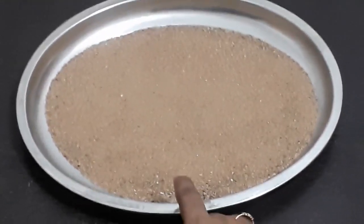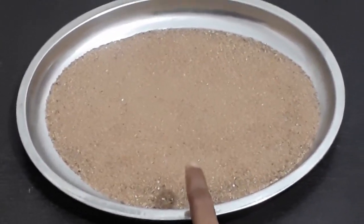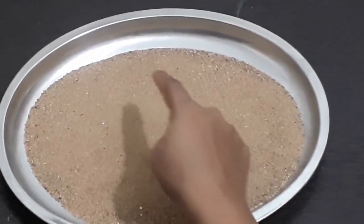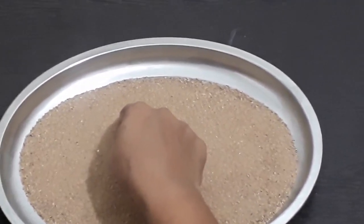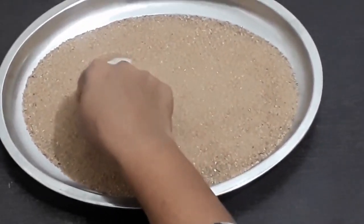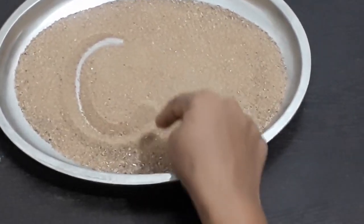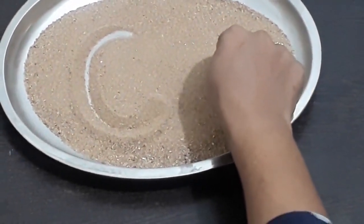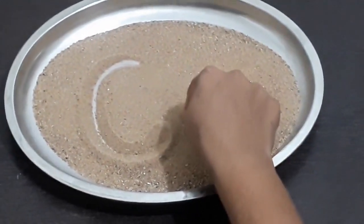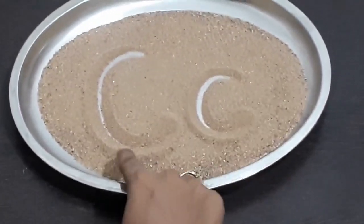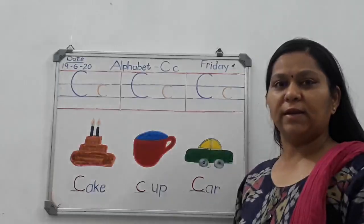Now let us practice writing C in the sand. For that I have a plate with some sand in it. Shall we start our sand writing? Take your finger, put it in the sand plane, and start making a curve. Go down, down, down and go a little bit up. This is our capital C. Now again make a curve, go down, down and go a little bit up. This is our small c. Capital C, small c.